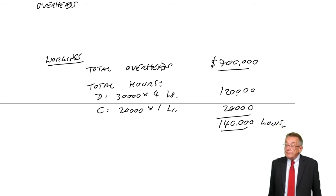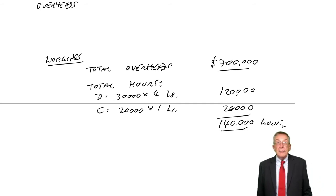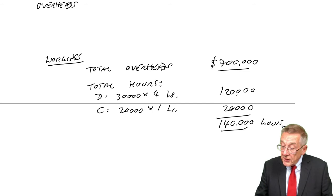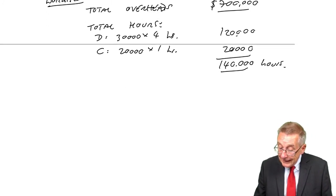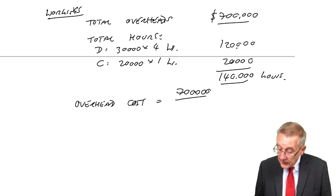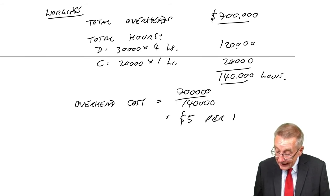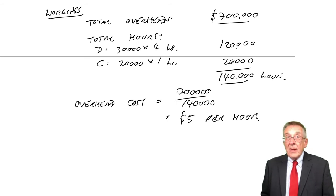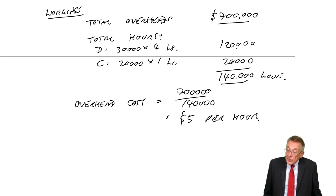And so we say, okay then, we're spending 700,000 overheads. We're working 140,000 hours. How much is it costing us per hour? The overhead cost per hour. 700,000 divided by 140,000 hours is what? $5 per hour. So every hour we spend in the factory is costing us $5 in overheads.